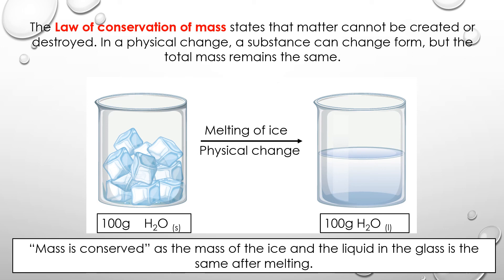The law of conservation of mass states that matter cannot be created or destroyed. In a physical change, a substance can change form but the total mass remains the same. For example, if we have 100 grams of ice cubes and we melt them, a physical change occurs — solid turns into liquid — but the mass of the water in the liquid state is exactly 100 grams as well. Mass is conserved, as the mass of the ice and the liquid in the glass is the same after melting.